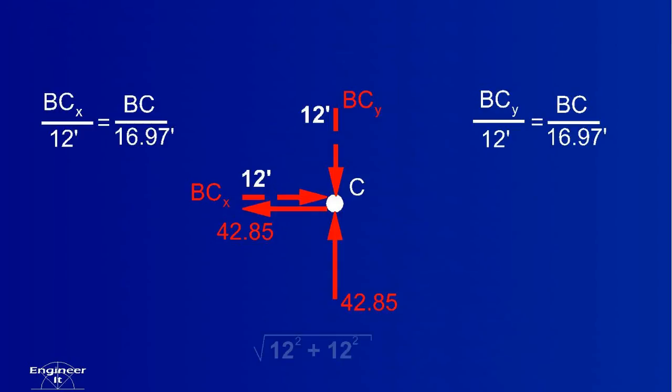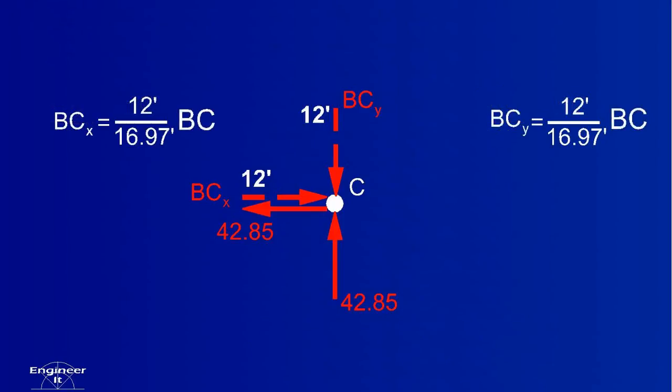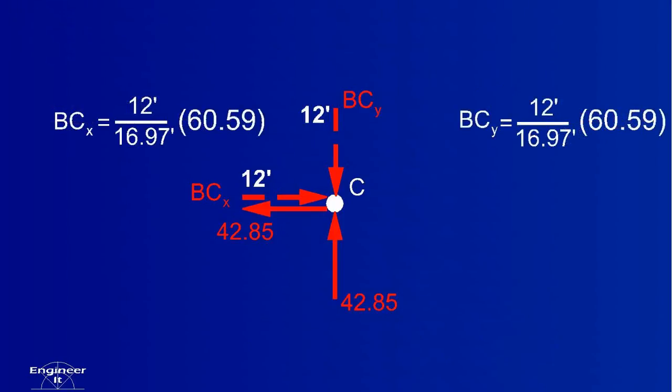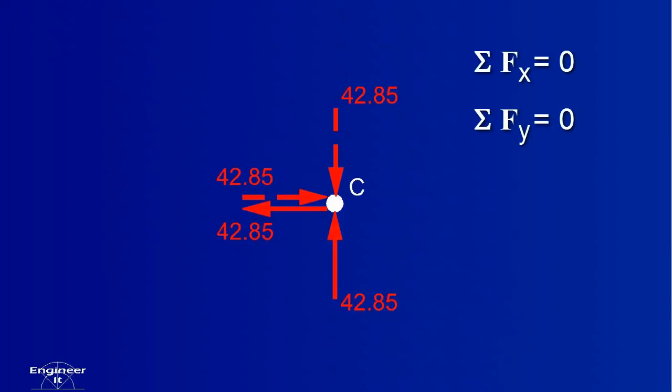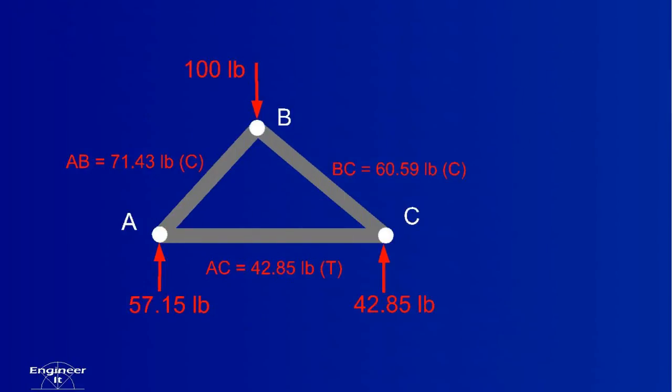The 16.97 is the length for BC acquired using the Pythagorean theorem. We already know the value for BC, so that can be used here. The answer is slightly off, but that's because some numbers are rounded during the calculations. Be careful of that. We can see that BC's components balance this joint to keep equilibrium. Now we can be positive the answers are correct.